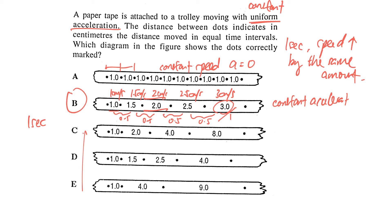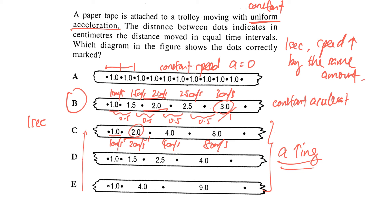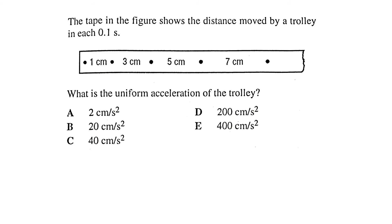For tape C, the distances are 1, 2, 4, 8 cm per second interval, giving speeds of 1, 2, 4, 8 cm/s. The speed is increasing, but at an increasing rate — meaning the acceleration itself is increasing, not constant. Therefore B is the answer for uniform acceleration.